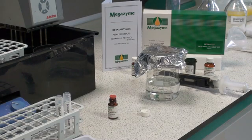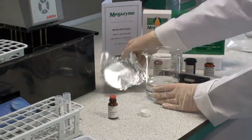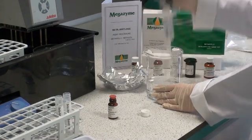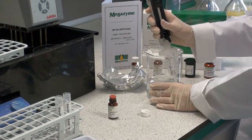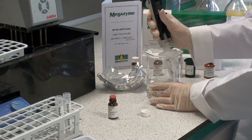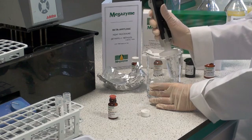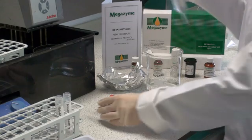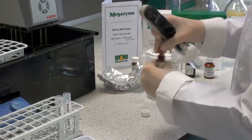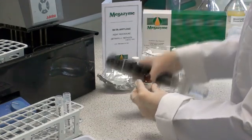Dissolve the contents of one of the vials of beta-amyl-3 reagent with 10ml of boiled and cooled distilled water. This water is prepared by microwaving until the water is boiling and then cooling this on ice to around room temperature. This will inactivate any enzymes likely to be present in the water.